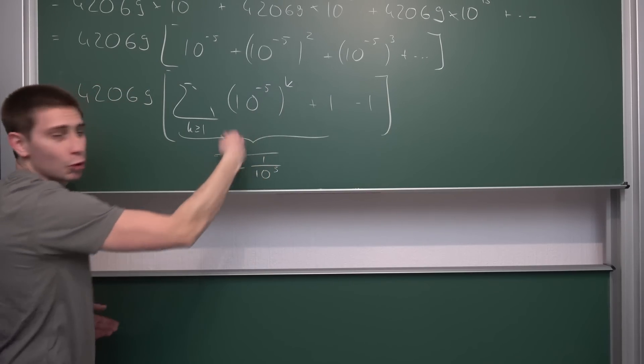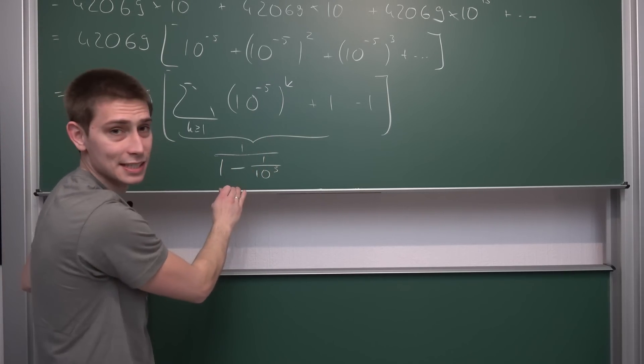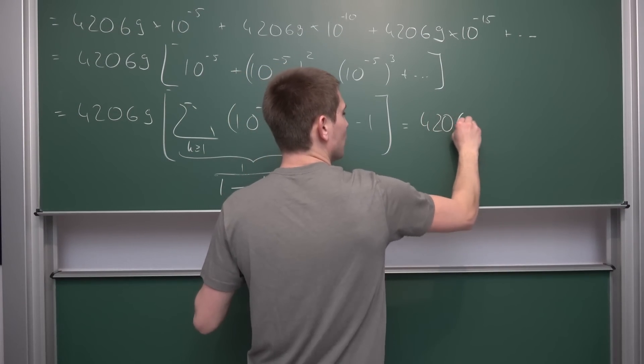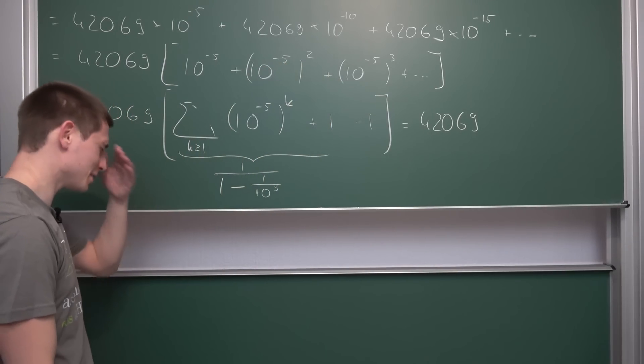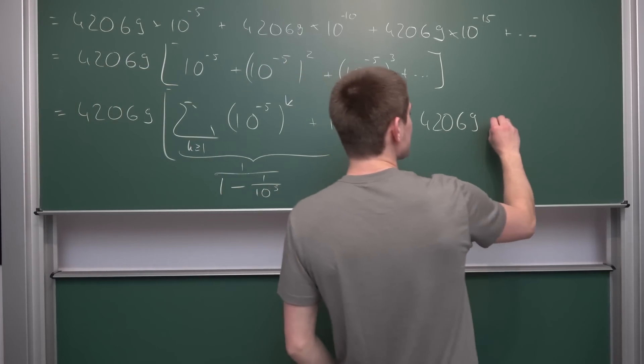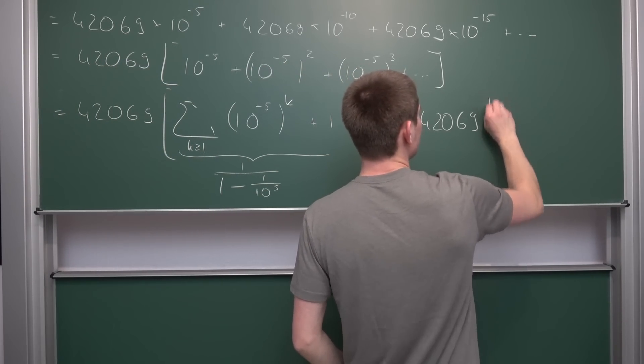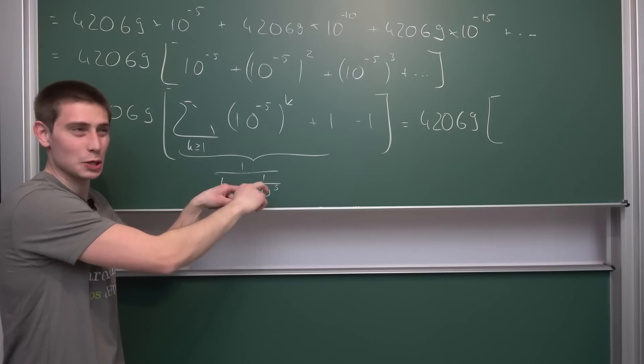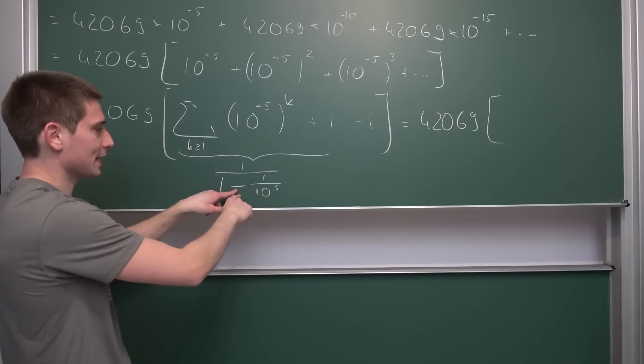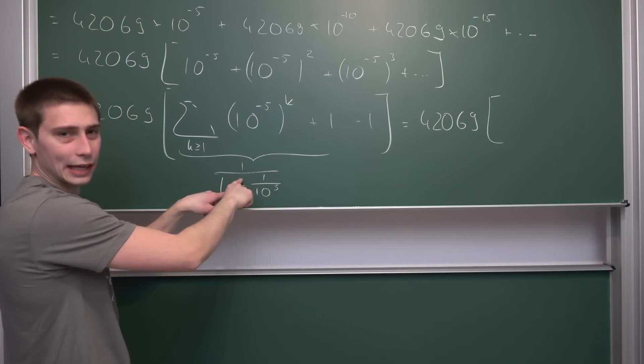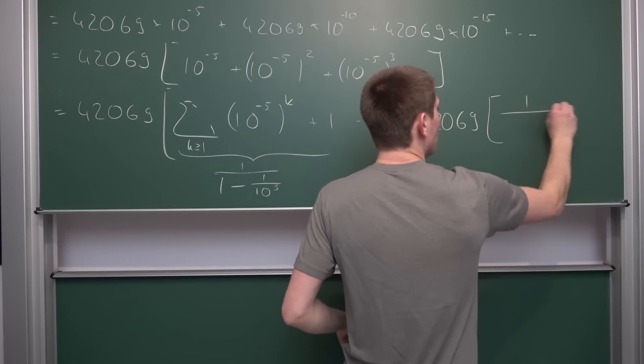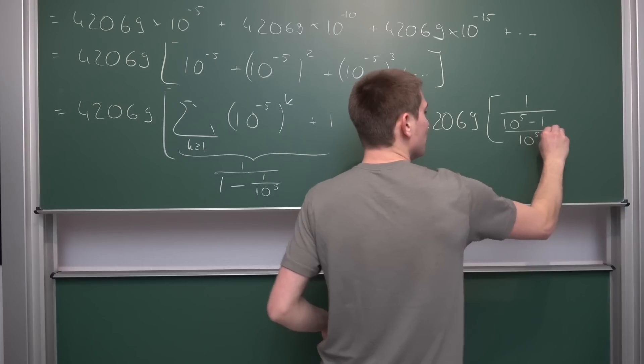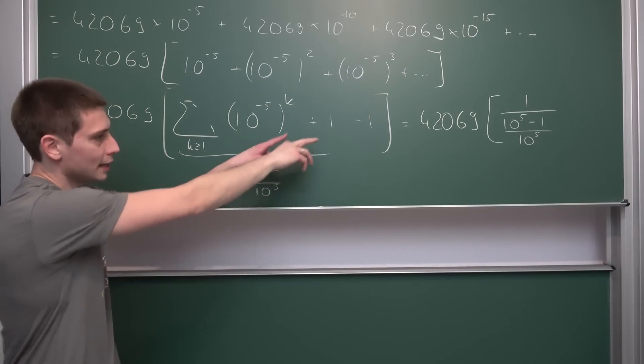Meaning, what we have here is nothing but the geometric series in 10 to the negative 5th power, leaving us with 1 over 1 minus 1 over 10 to the 5th power, and all of this minus 1. Now we can start computing what we have here in parentheses. So what we got is 42069 and this multiplied with 1 over 1 minus 1 over 10 to the 5th power, which is 1 over 10 to the 5th power minus 1 over 10 to the 5th power, and then negative 1.